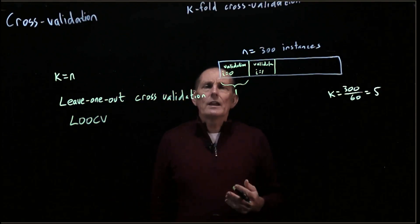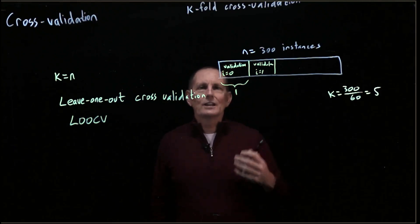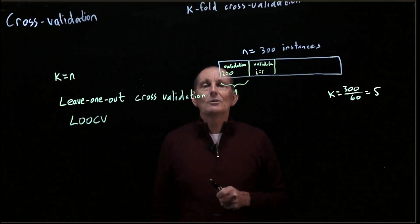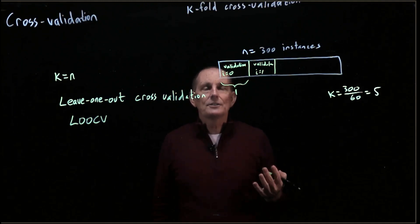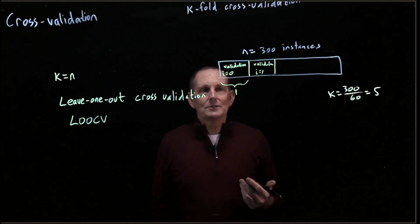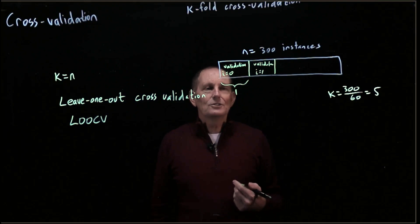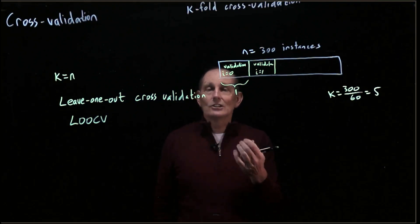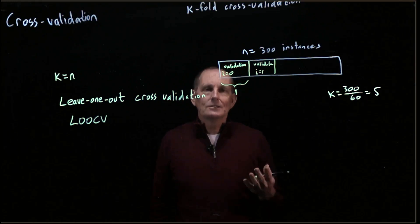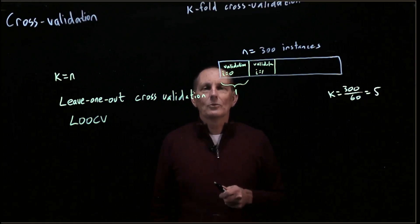We don't use this all that often in neural networks just because the cost of training a network is so high. But if you've got a small amount of data, let's say you've got 100 samples or 80 samples or 50 samples, then it can be costly to have a validation set any size larger than one. And so this is something to consider and always keep in the back of your mind when you're dealing with small amounts of data.